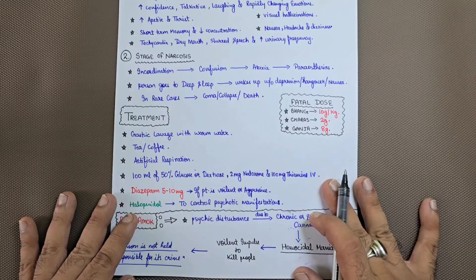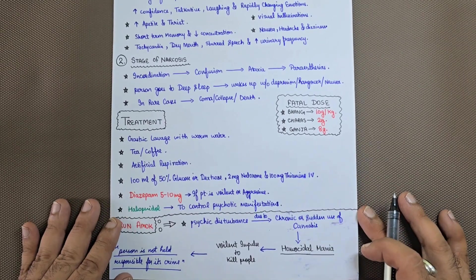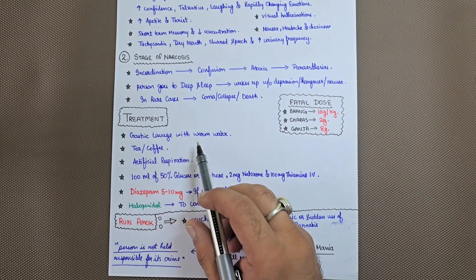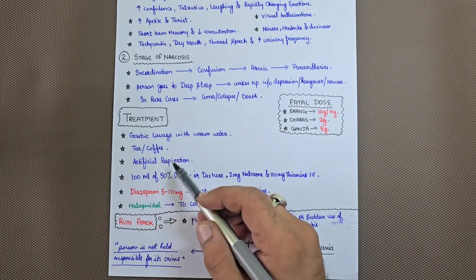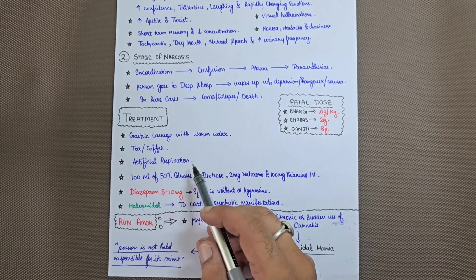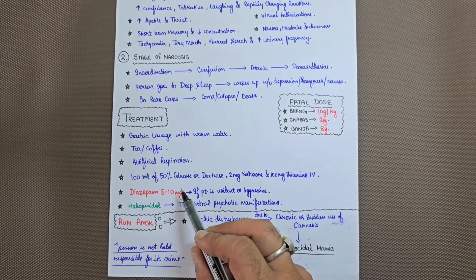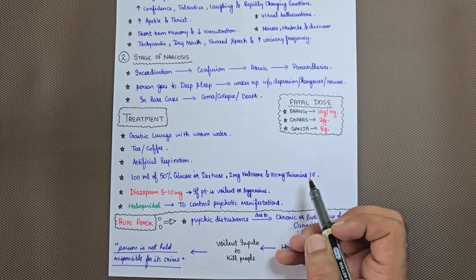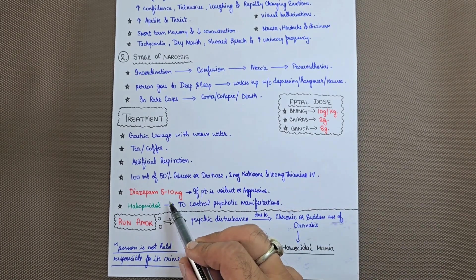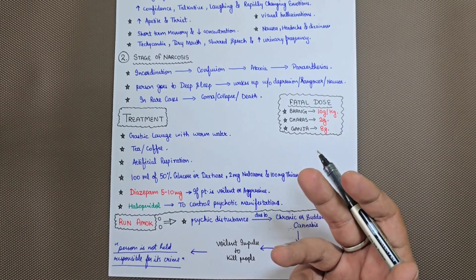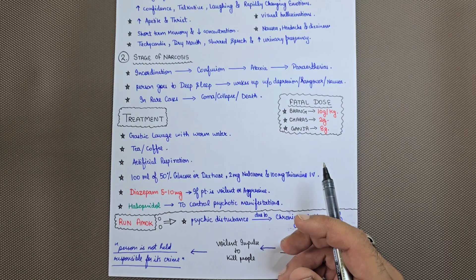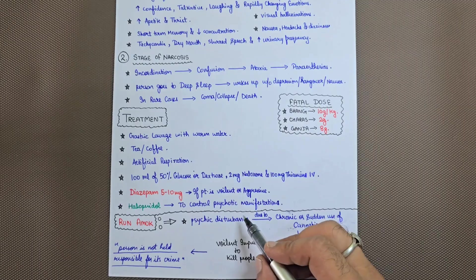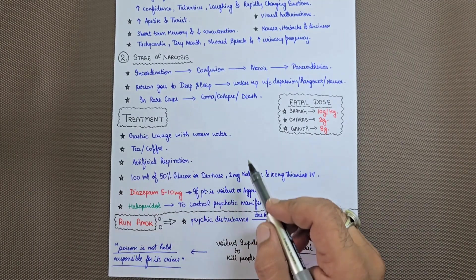What is the treatment when a patient comes to you after consuming cannabis? First, gastric lavage with warm water. Tea and coffee will be given. Artificial respiration is needed in many cases. 100 ml of 50% glucose or dextrose with 2 mg naloxone and 100 mg IV thiamine is to be given. Diazepam 5 to 10 mg if the patient is violent or aggressive, and haloperidol to control psychotic manifestations.